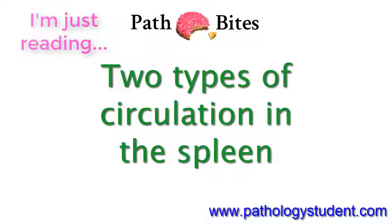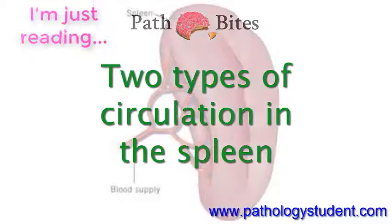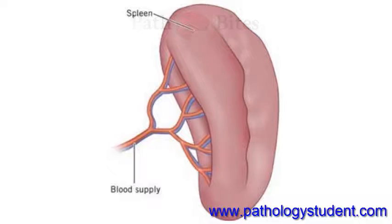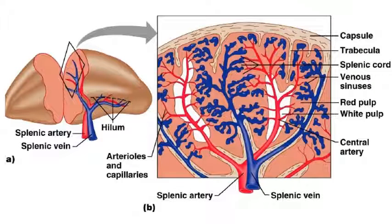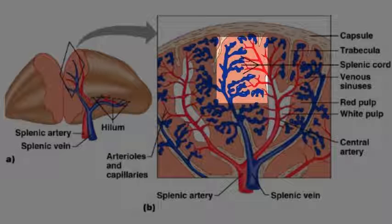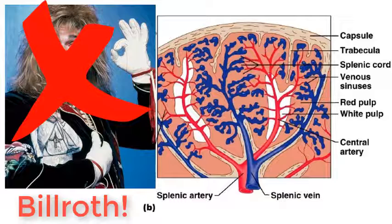Here's something that is easy to forget for some reason. There are really two kinds of circulation going on in the spleen: open and closed. First, open circulation. Blood flows through the capillaries into the splenic cords — the cords of Bilroth — which are basically the filters of the spleen.